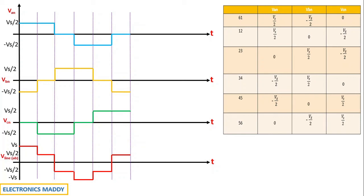You might ask why the transitions from Vs/2 to 0 or 0 to minus Vs/2 appear as straight vertical lines rather than gradual slopes. It is because these are resistive loads, so the changes are instantaneous. As a result, the transitions from plus Vs/2 to 0 or 0 to minus Vs/2 are shown as rapid step changes.